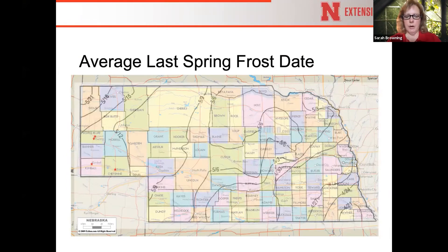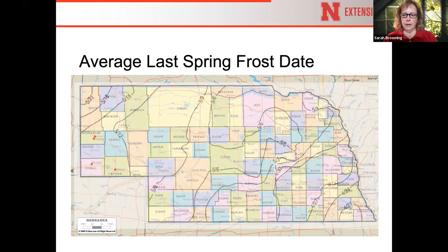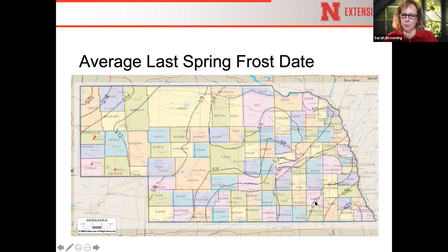I wanted to start off by talking about planting dates and when you can actually get started, because we're talking about cool season crops. What you're seeing on this map are the darker lines across the state indicating approximately when the average last spring frost occurs. Down in the southeast corner of Nebraska, April 21st is about when that last frost happens; way out west in the panhandle it's more like May 21st. Here in Lancaster County it's about April 27th; slightly west it's about May 3rd.